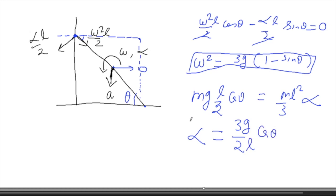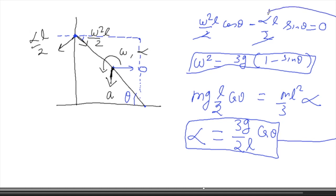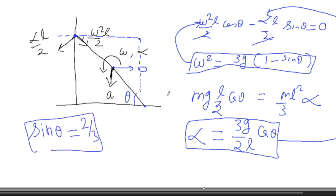Now you have α, which you can substitute into the horizontal acceleration equation, along with ω² = 3g(1 − sinθ). After 2 to 3 steps you will be able to prove that sinθ = 2/3. So from here you can conclude that sinθ = 2/3 when the rod just loses its contact with the vertical wall. There is one more way of doing this problem which I will tell you later if we discuss the same problem again in future.